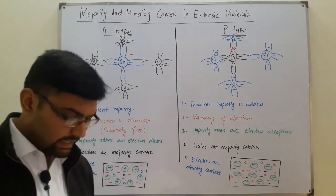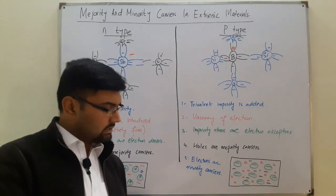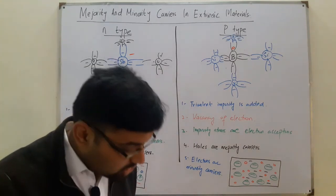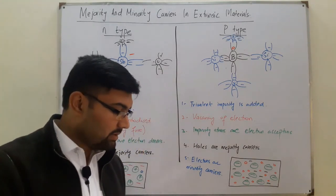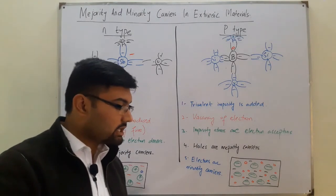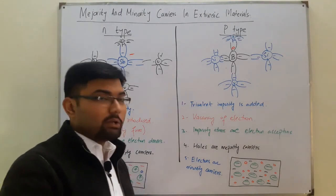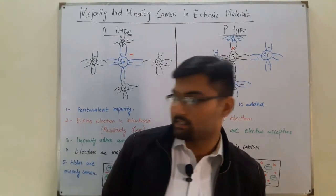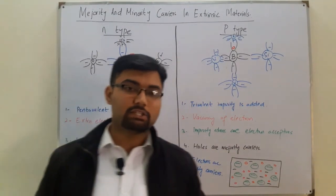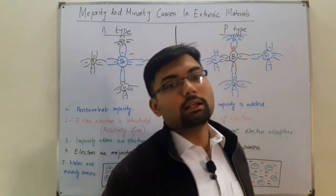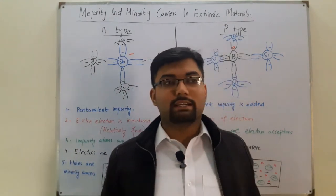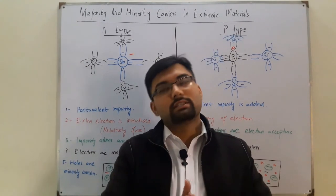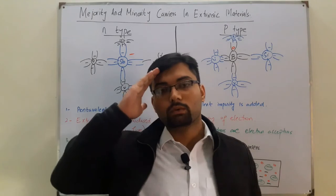The n-type and p-type materials represent the basic building block of semiconductor devices. In the next section, we will find that joining a single n-type and p-type will result in a very important semiconductor device — the p-n junction diode. See you there. That's all for today; see you in the next lecture very soon, inshallah. Till then, take care of yourself and everyone around you. Goodbye.